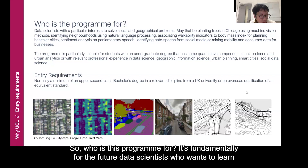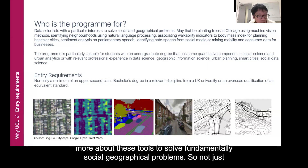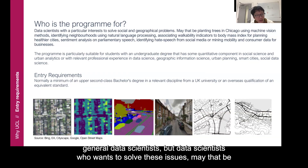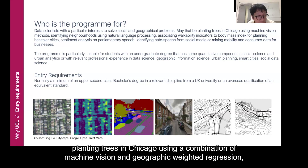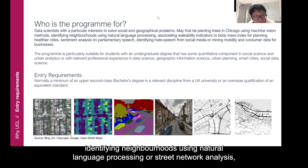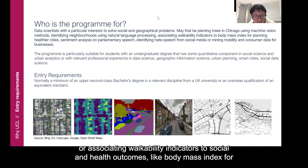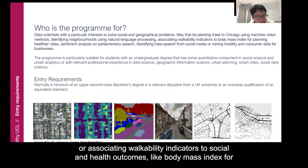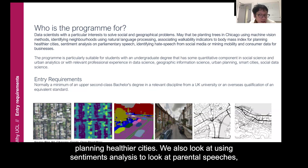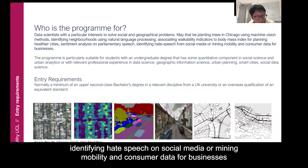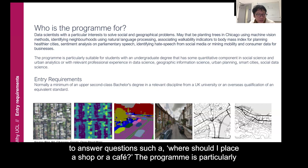So who is this program for? It's fundamentally for the future data scientists who want to learn more about these tools to solve social and geographical problems — not just general data scientists, but data scientists who want to solve these issues. That may be planting trees in Chicago using a combination of machine vision and geographically weighted regression, identifying neighborhoods using natural language processing or street network analysis, or associating walkability indicators to social and health outcomes like body mass index for planning healthier cities. We also look at using sentiment analysis on parliamentary speeches, identifying hate speech on social media, or mining mobility and consumer data for businesses to answer questions such as where should I place a shop or a cafe.